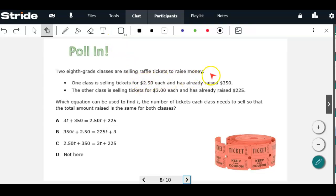So two eighth-grade classes are selling raffle tickets to raise money. One class is selling tickets for $2.50 each and has already raised $350. The other class is selling tickets for $3 each and has already raised $225. Which equation can we use to find T, the number of tickets each class needs to sell, so the total amount raised is the same for both classes? We don't know how many tickets they need to sell, so that's what we're trying to figure out. If we let T be the number of tickets, then we're going to look at this first class is $2.50 for each ticket, so $2.50T. And they've already raised $350, so that's plus the $350.